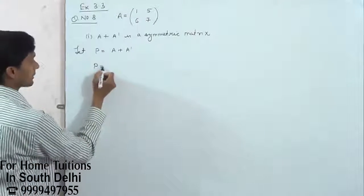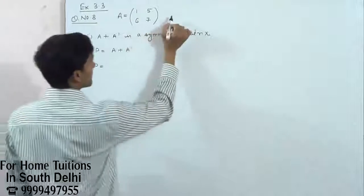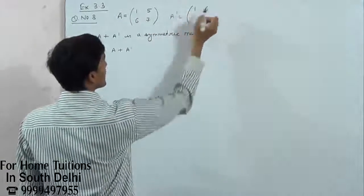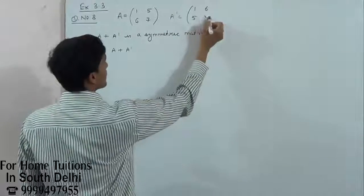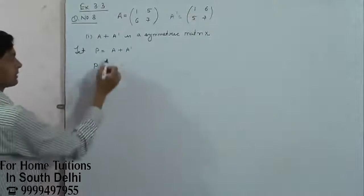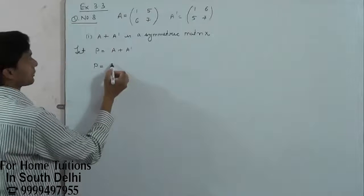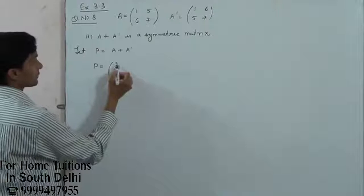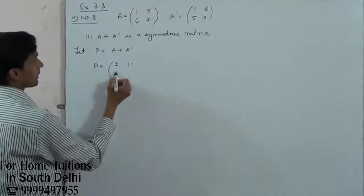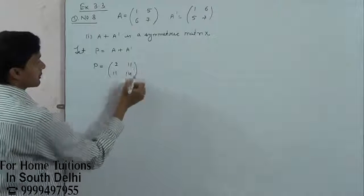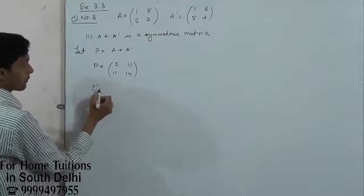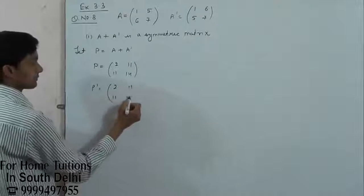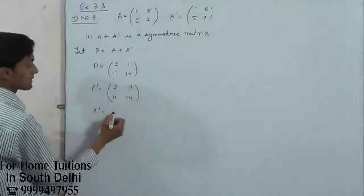P dash is equal to... 11, 4, 11, 14. Okay. P dash, look: 11, 14, 11, 14. P dash is equal to P.